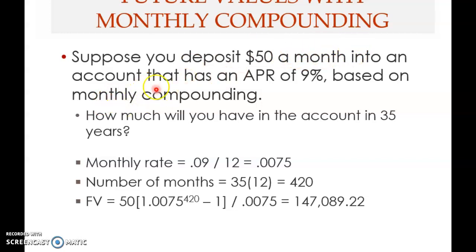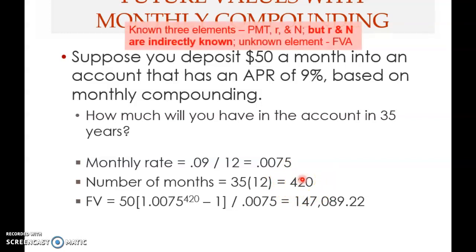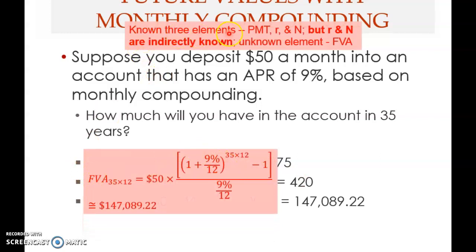If the payment is weekly, the compounding must also be weekly — these two must agree. The first adjustment: convert APR to the period rate. Nine percent divided by 12 equals 0.0075, or 0.75% per month. The second adjustment: convert the term to months. 35 multiplied by 12 equals 420 months. The three known elements in the future value formula are: payment = $50, r = 9% ÷ 12, and N = 420.